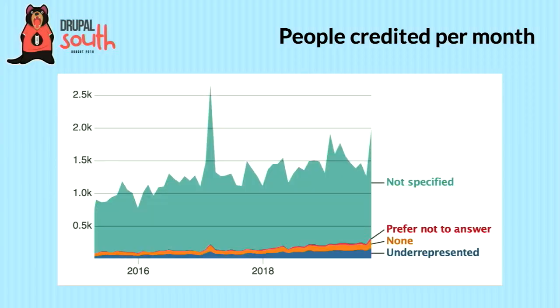Basically this graph shows which region of the world contributions are coming from. In 2018 we also added the ability to privately share if you are a member of an underrepresented community — things like whether your race is a minority in your field and location, or if you're a woman in a male-dominated industry. There are 10 categories, some you wouldn't think of as diversity right away, like age and socioeconomic status. These are all self-reported on your Drupal.org profile.